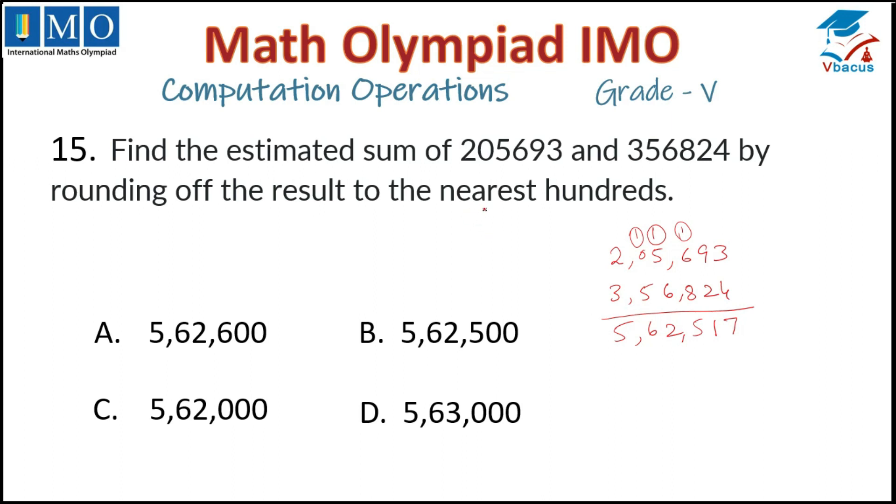So 562,517. We have to round off to the nearest 100. At hundreds place 1 is there, which is less than 5, so it will be 500. 5 lakhs 62,500. That is in option B. So option B is correct.